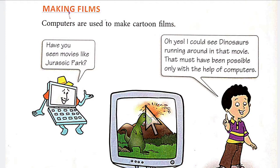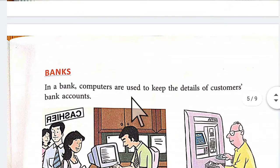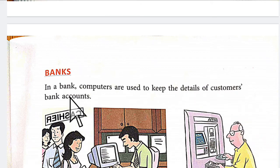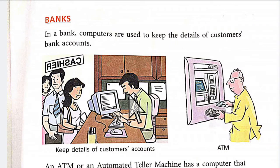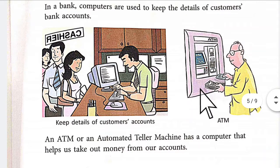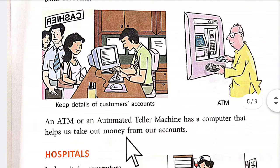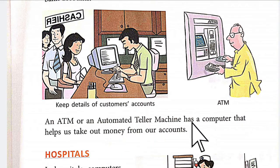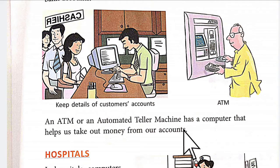Another area is the bank. Computers are used to keep the details of customers' bank accounts — all the details of every customer account are stored on the computer. The ATM is also one type of computer — it stands for Automated Teller Machine, and you can take money from it.